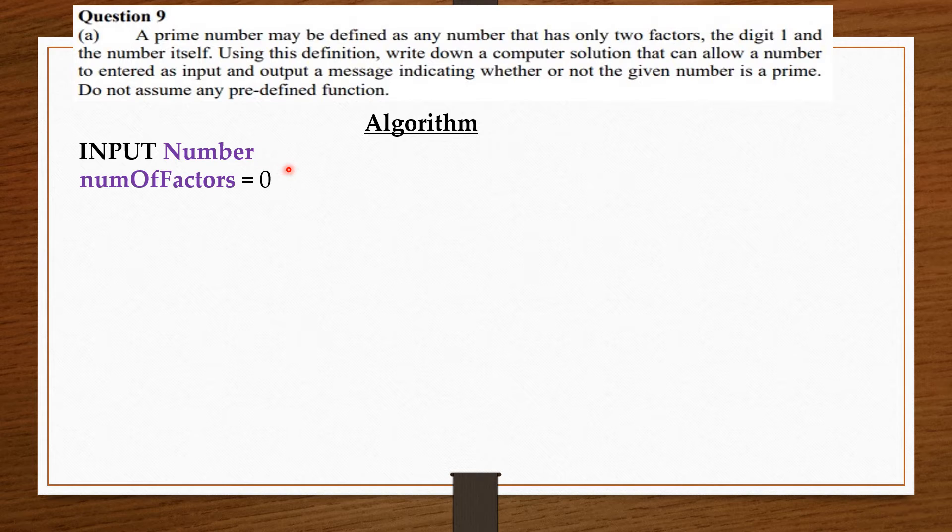Now, to know the number of factors of a particular number, we know that a prime number has only two factors, and these two factors go into the number completely without any remainder. So if I have five and five is a prime number, its factors are one and five. And I know that one and five go into five completely without any remainder, so the remainder is going to be zero. The number of factors go into that particular number without any remainder.